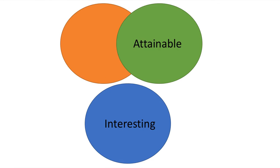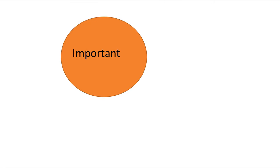Another combination is that something is attainable and important but not interesting — like learning how to do your taxes. It's not the most interesting thing in the world, but it's important because otherwise you can get in trouble with the government, and although it seems challenging, it is attainable with tutorials and scaffolding. Some students need just one of these goals to engage; some need two; and then there are students who need to give effort only if all three are in place.